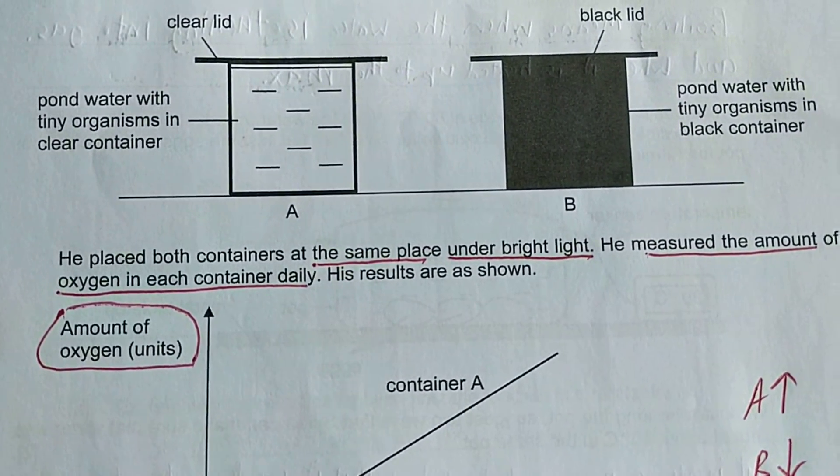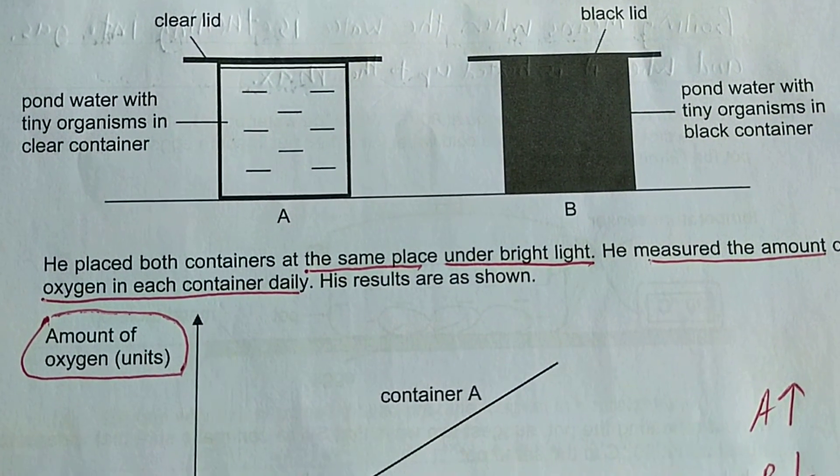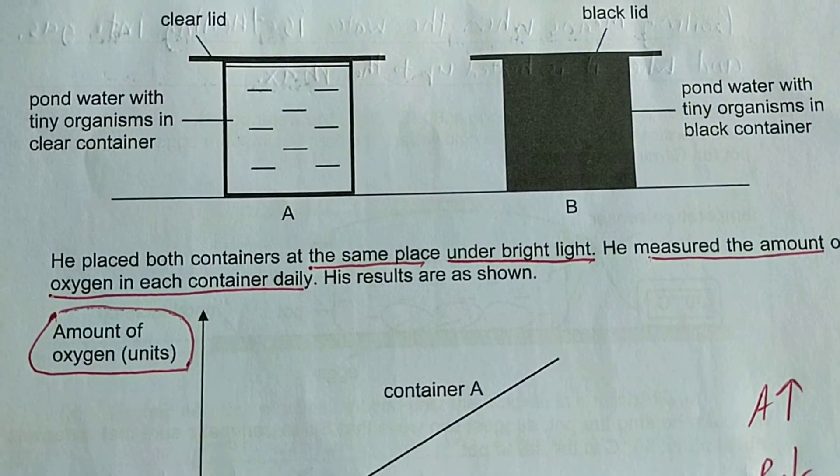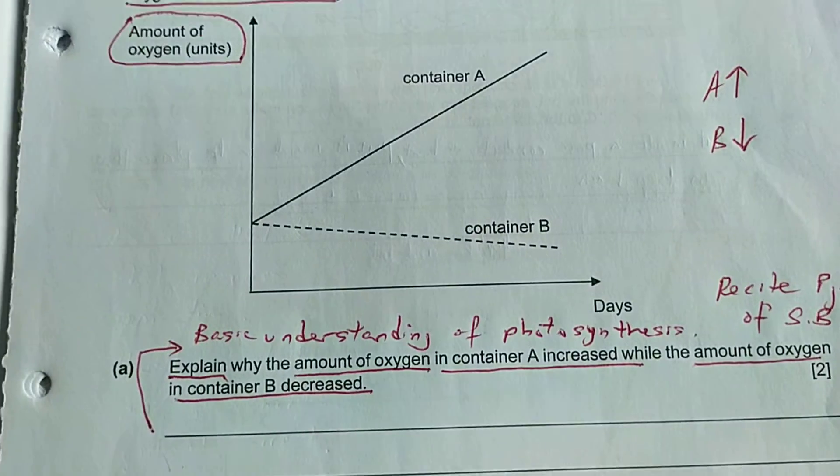In container B, organisms cannot receive light, cannot photosynthesize, cannot produce oxygen. So this is the simplest type of answer the students can give in point form.